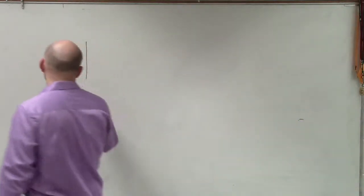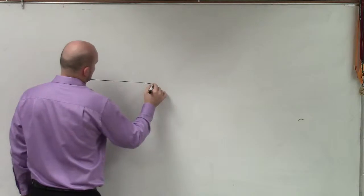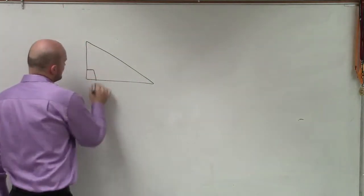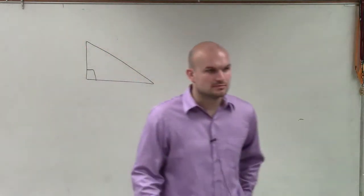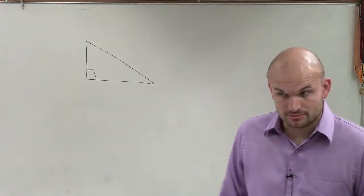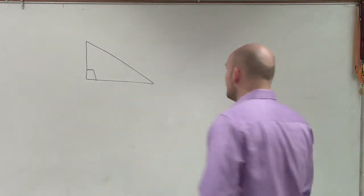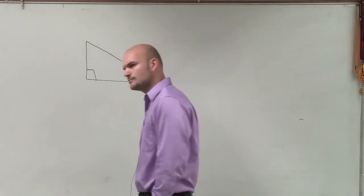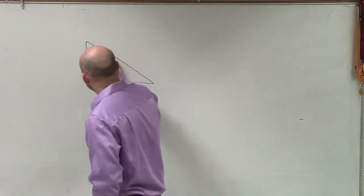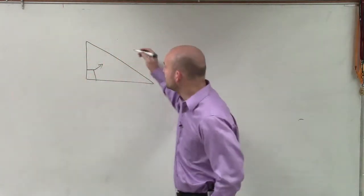All right, so so far in math class, we have talked about triangles that look like that, which is a right triangle. And on the right triangle, one of the things we talked about was across from the right triangle was what we call the hypotenuse.